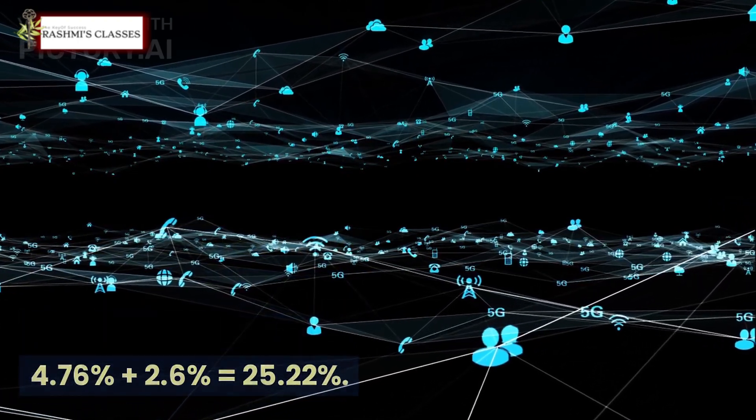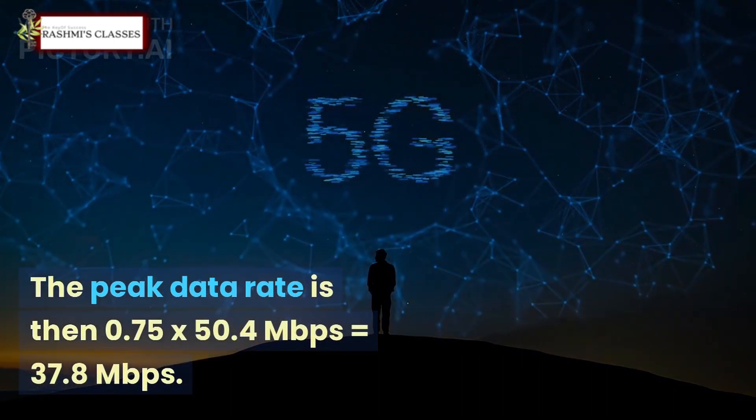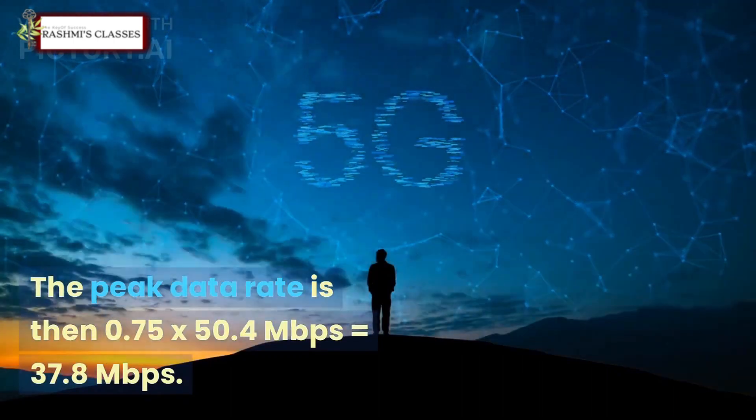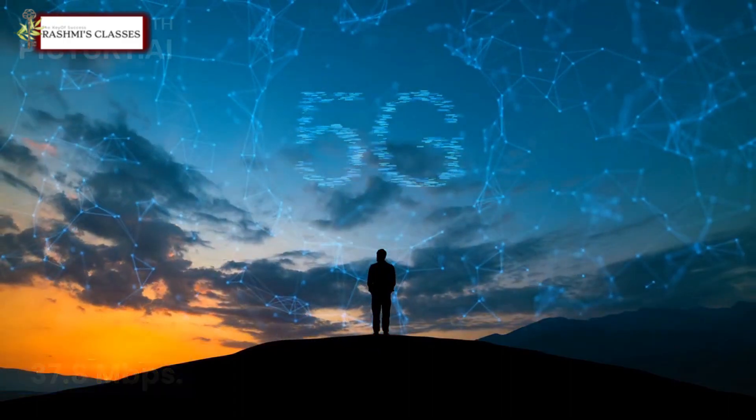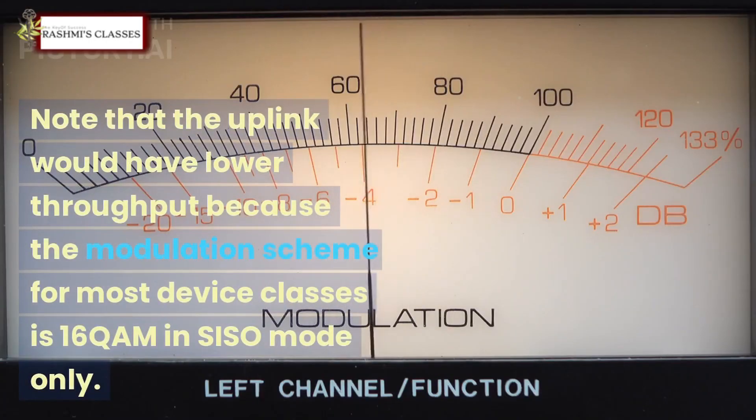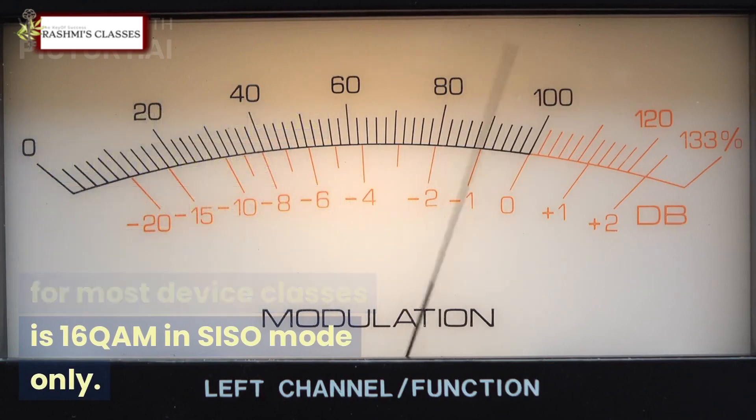The peak data rate is then 0.75 x 50.4 megabits per second = 37.8 megabits per second. Note that the uplink would have lower throughput because the modulation scheme for most device classes is 16-QAM in SISO mode only.